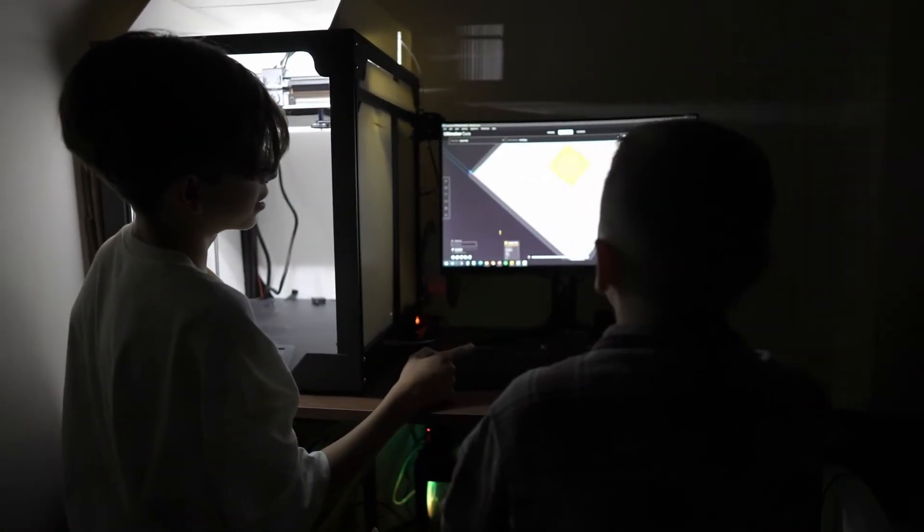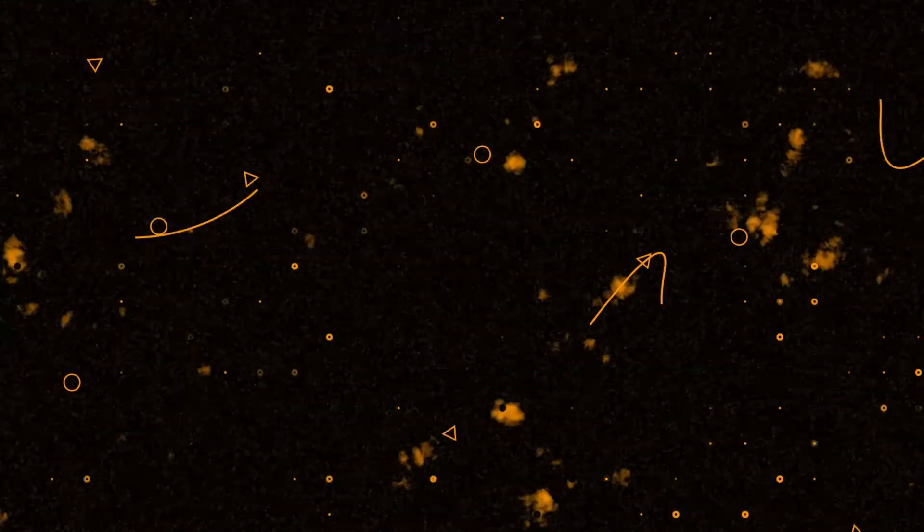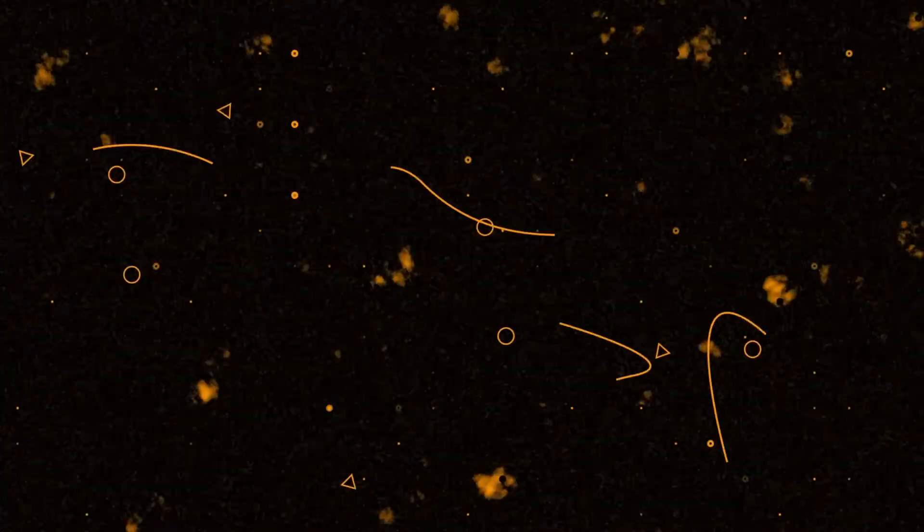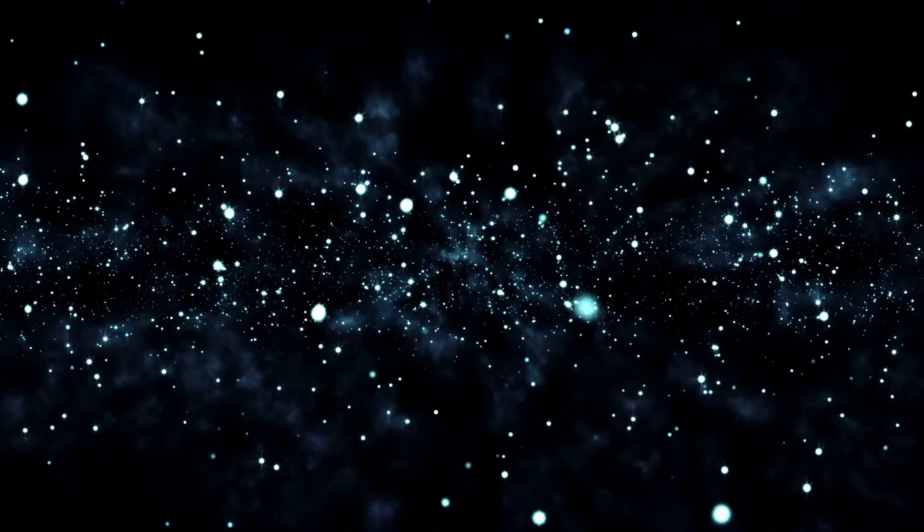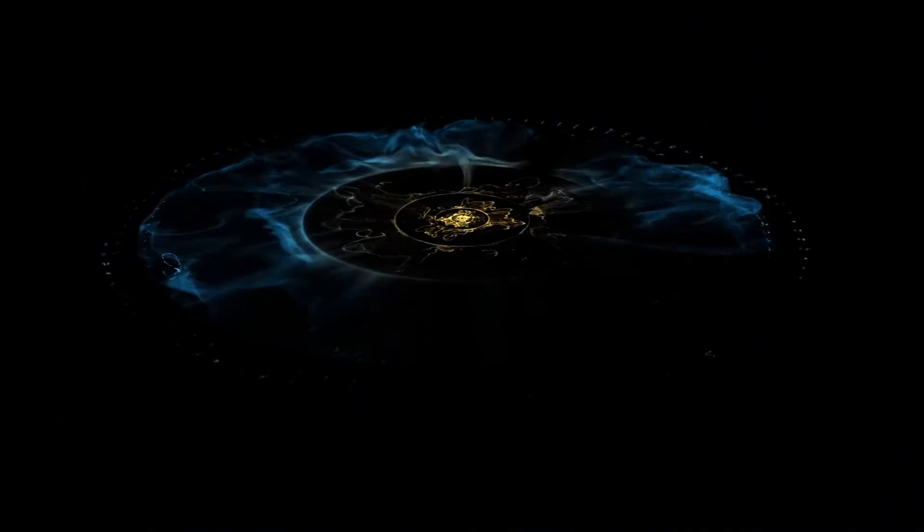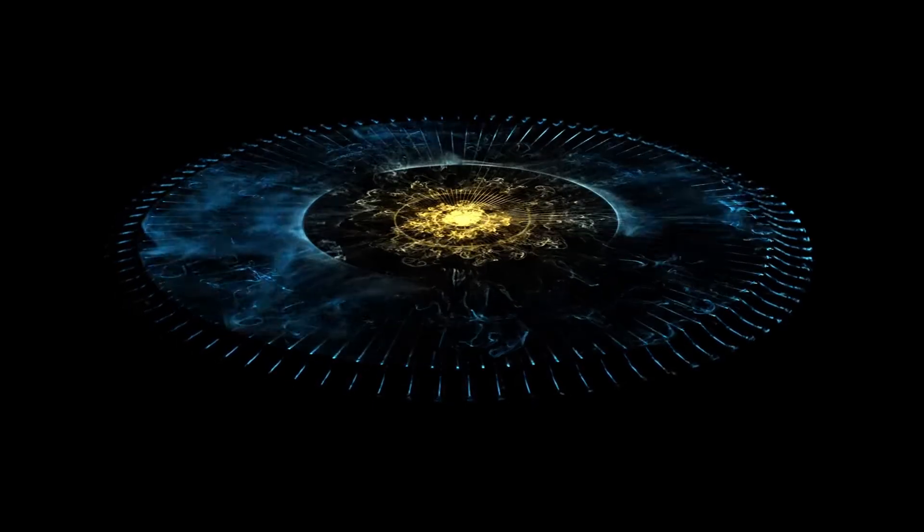Then the solar and heliospheric observatory detected a whisper in gravity itself. Subtle but measurable shifts in the solar wind's density appeared each time the swarm passed through a specific orbital node. The effect repeated every orbit, precise to the millisecond, creating a gravitational echo that shouldn't exist. As models were built to simulate the behaviour, they revealed an extraordinary truth.